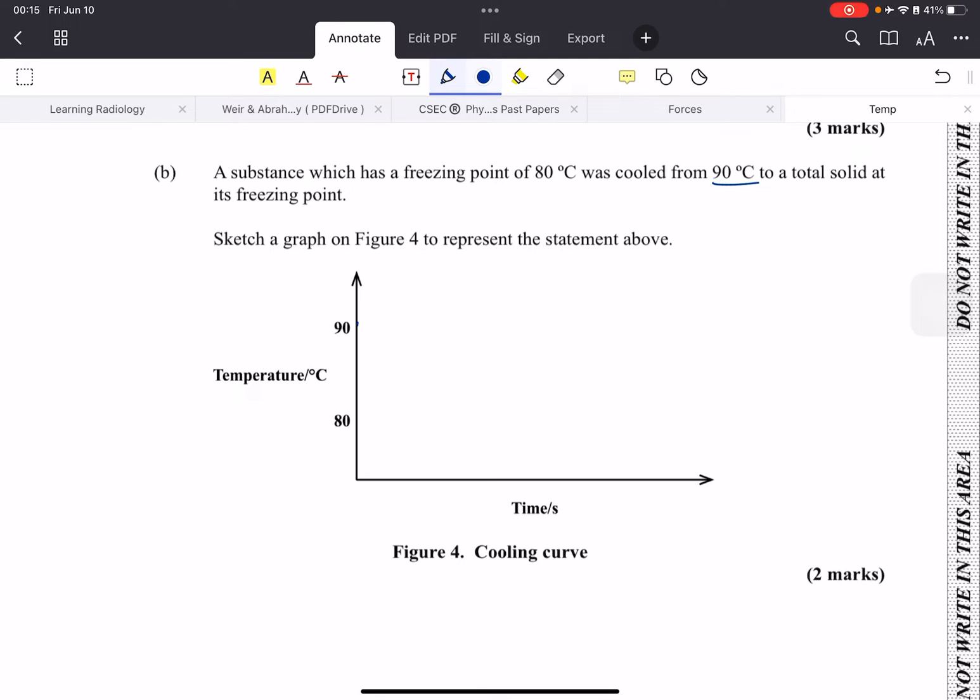If we let it cool in a graph, the temperature will gradually go down to 80. But we realize when it hits 80, the temperature is going to remain the same, although it is losing energy. That energy that is losing is actually being used to change the state and not the temperature just yet. Only after it has gone to a solid will it continue to lose more heat. This is the graph that you would have to draw.